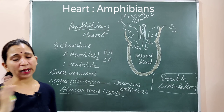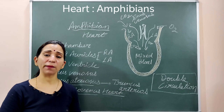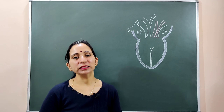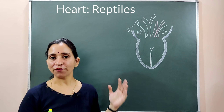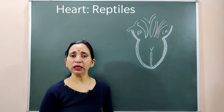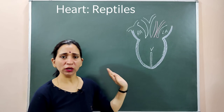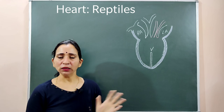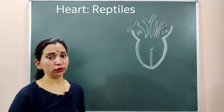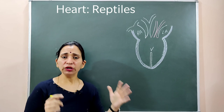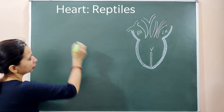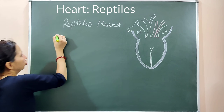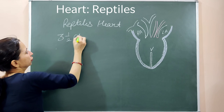Moving on to the reptilian heart — as in amphibians the heart is three-chambered with two atria and one ventricle, but in reptiles it is not strictly called a three-chambered heart. The reptilian heart is known as a three-and-a-half chambered heart because the ventricles are partially divided by a septum, unlike in amphibians where there is no such division.